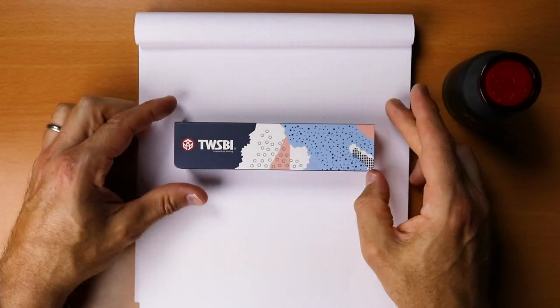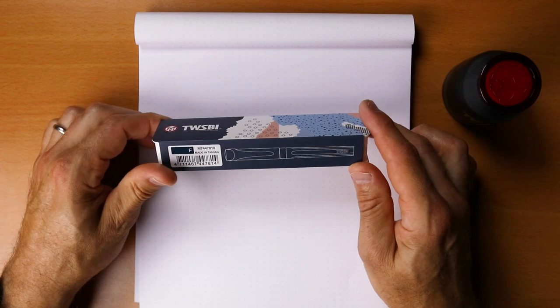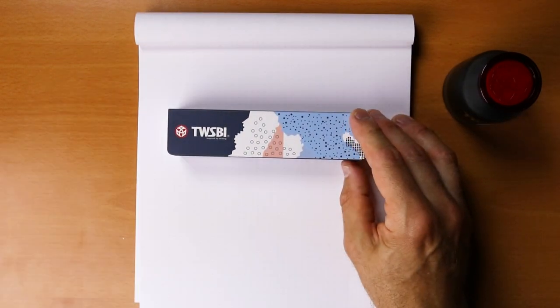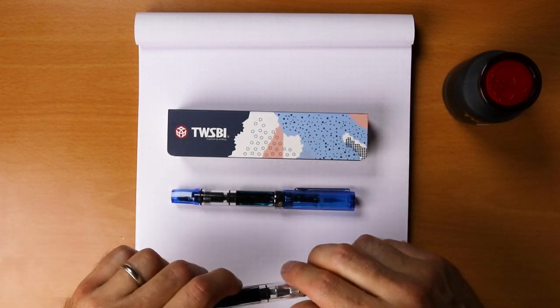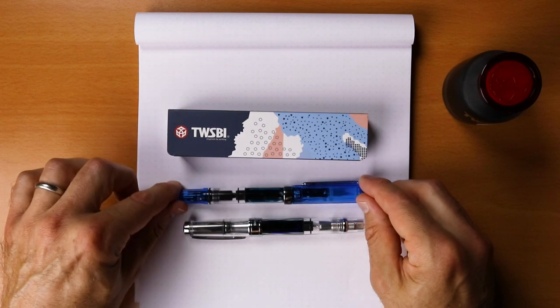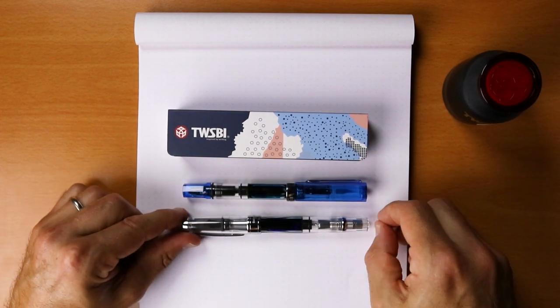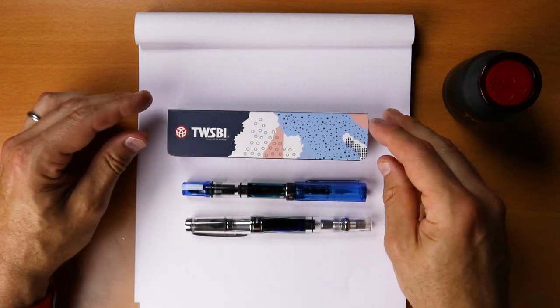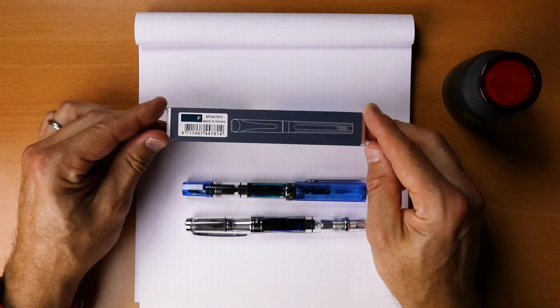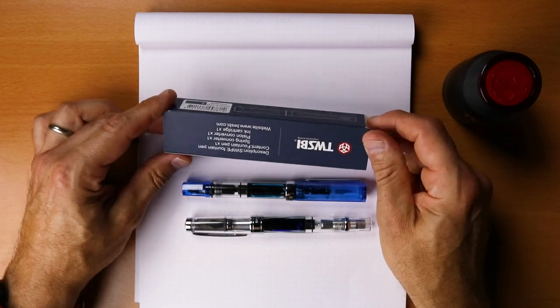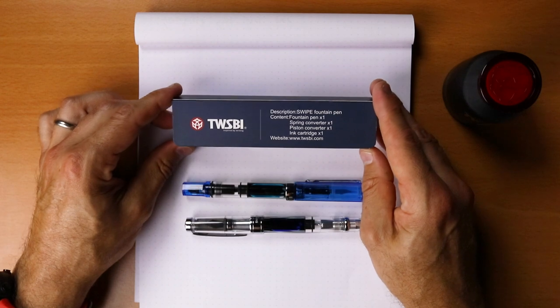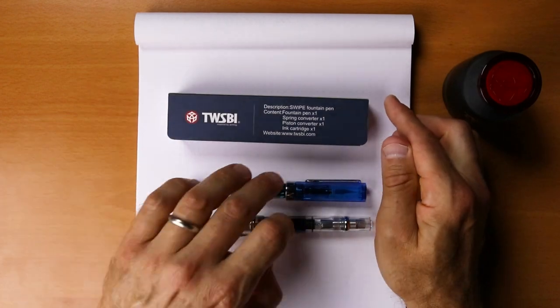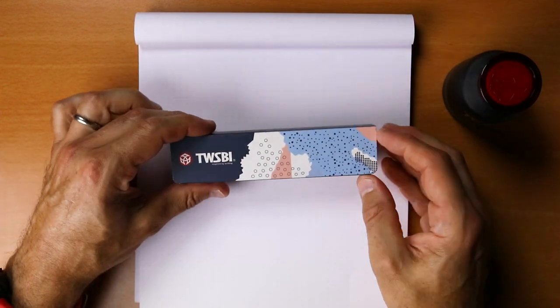First thing to notice about the Swipe is it's actually a lower cost fountain pen, around about $35 or $36. Compared to something like the Twisby Eco or the 580, it's a low cost pen. So bear that in mind as I show you this pen. And I haven't even tried it actually. I'm interested to see what the quality is because I'm assuming it's going to be similar to something like the Kaweco Sport or maybe the Lamy Safari. Let's unbox this.